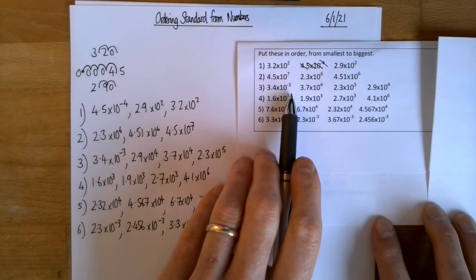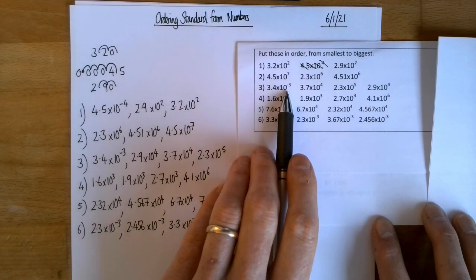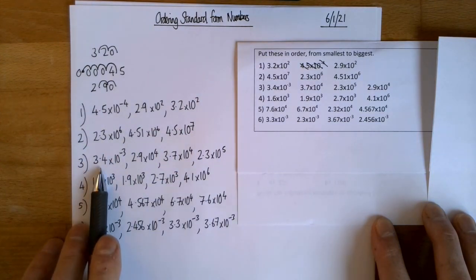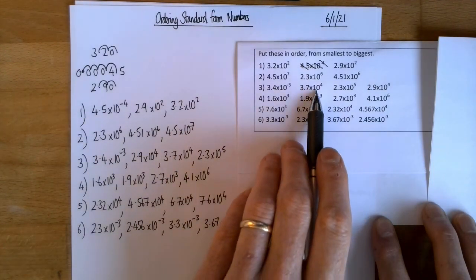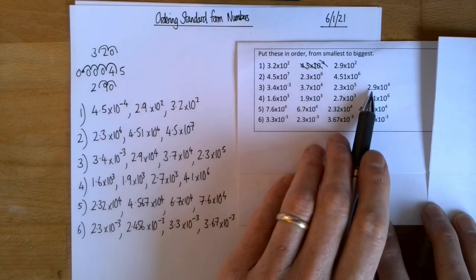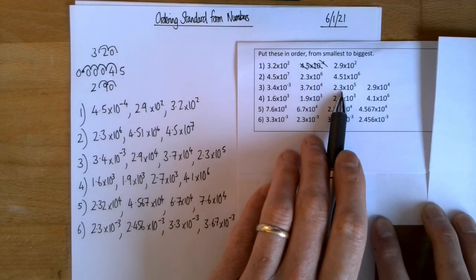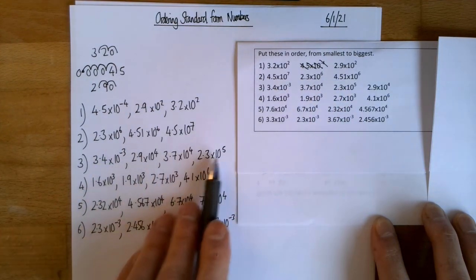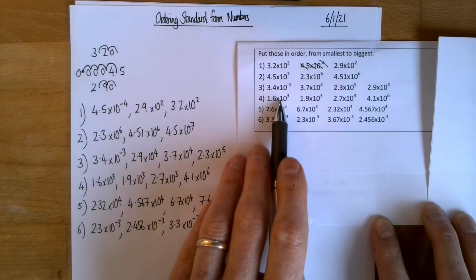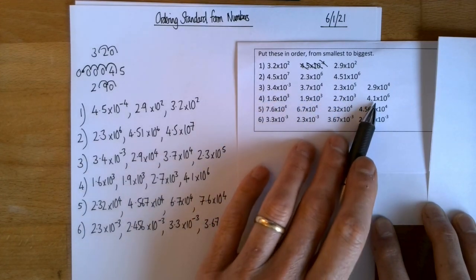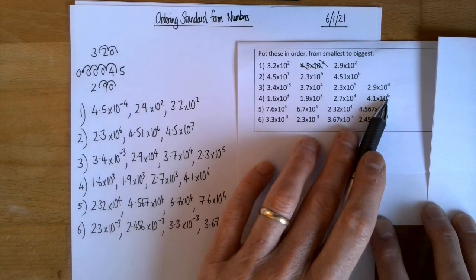OK, so with number 3, I had one 10 to the minus 3 number. That's the tiniest. So that was bound to come first. I then had a couple of 10 to the power of 4 numbers. So I then looked at the number between 1 and 10. So that came first, followed by that one, and then that came after. So that was that. And with number 4, I had three 10 to the power of 3 numbers. So I just put those in order. They were already in order, weren't they? And then I had that was the biggest because it was 10 to the power of 6.